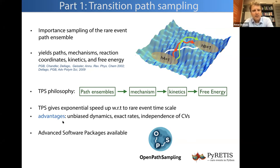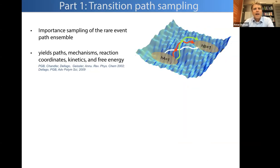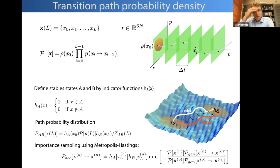In many cases there is a separation of timescales. The advantages with respect to other path methods are that you get unbiased dynamics — all trajectories are real molecular dynamics trajectories — exact rates, and independence of collective variables. Software packages are available; I want to point out OpenPathSampling in particular.